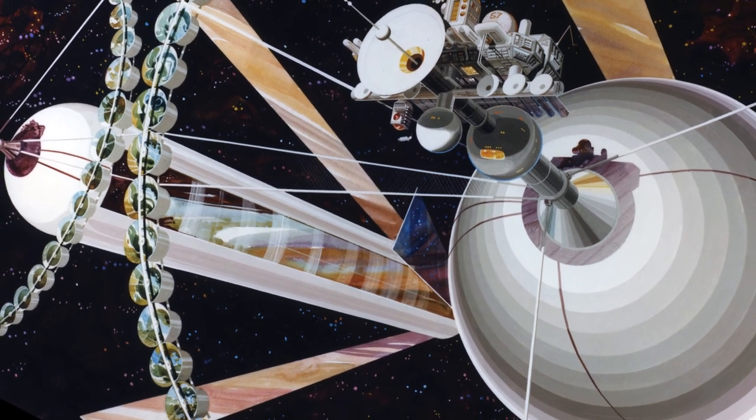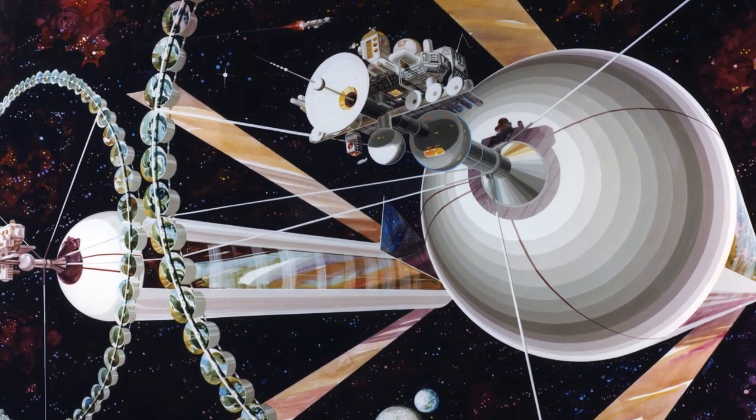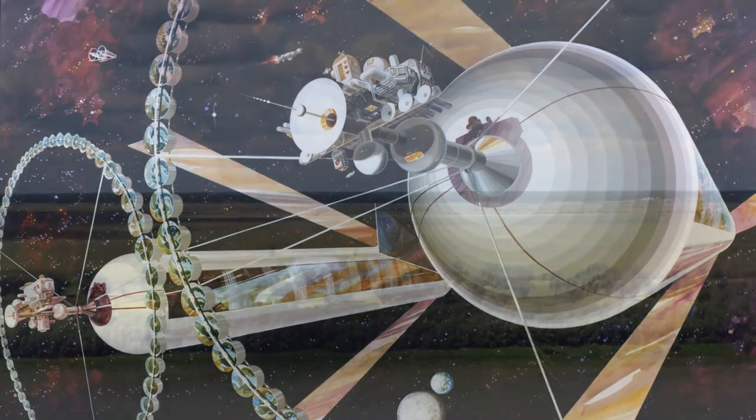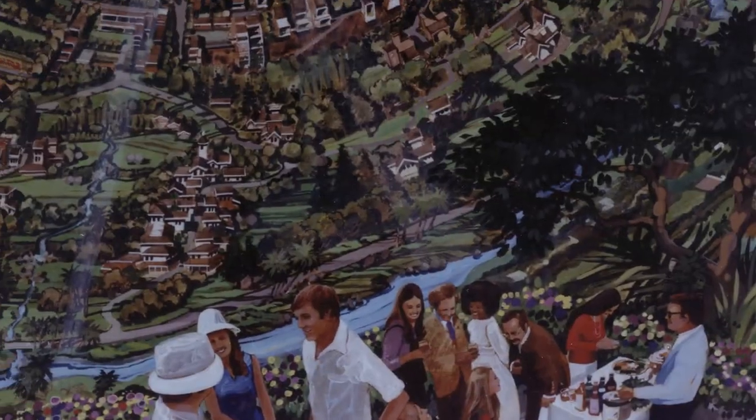An O'Neill Cylinder is about as big as we can safely build a rotating habitat with modern materials, and such a habitat might be sparsely populated, a dedicated nature preserve, or home to millions.